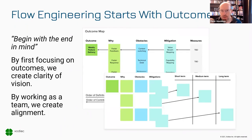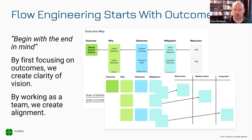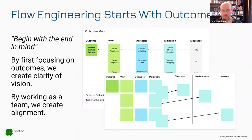Flow engineering starts with outcomes — begin with the end in mind. We want to ensure we're focusing on outcomes and creating clarity of vision. Working as a team, we create alignment first: what is the outcome we want? What are the reasons we want to get there? What are the obstacles we might need to overcome, and what can we do about them? That in itself will provide us with a path forward — a backlog of impediments that is our map, showing what we need to do to move forward.